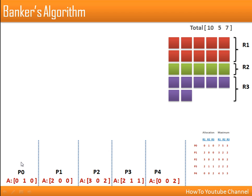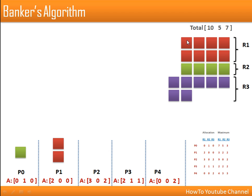At a particular time, these are the two matrices given at the beginning. We have five processes shown with their current allocation. Process P0 is having one instance of resource R2, meaning one instance of R2 is allotted to P0.